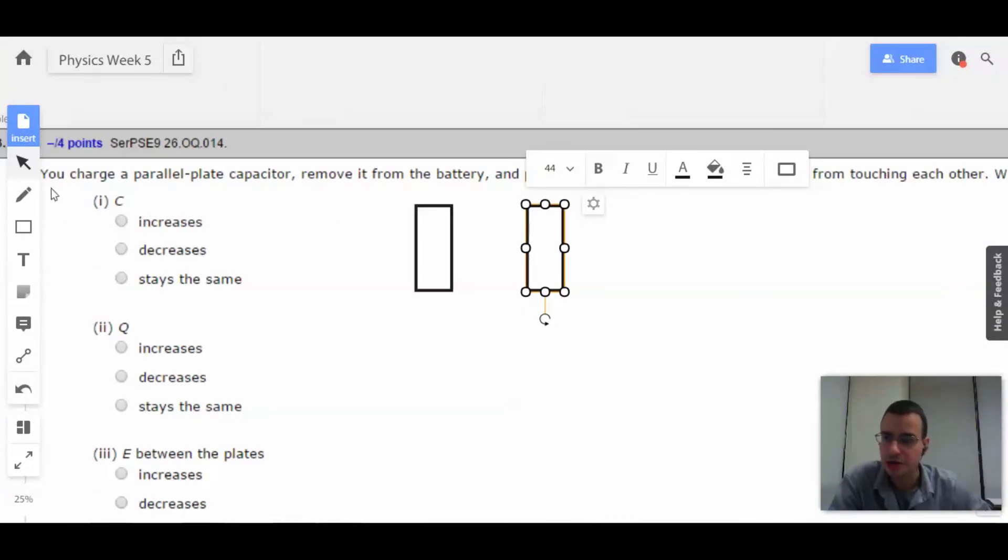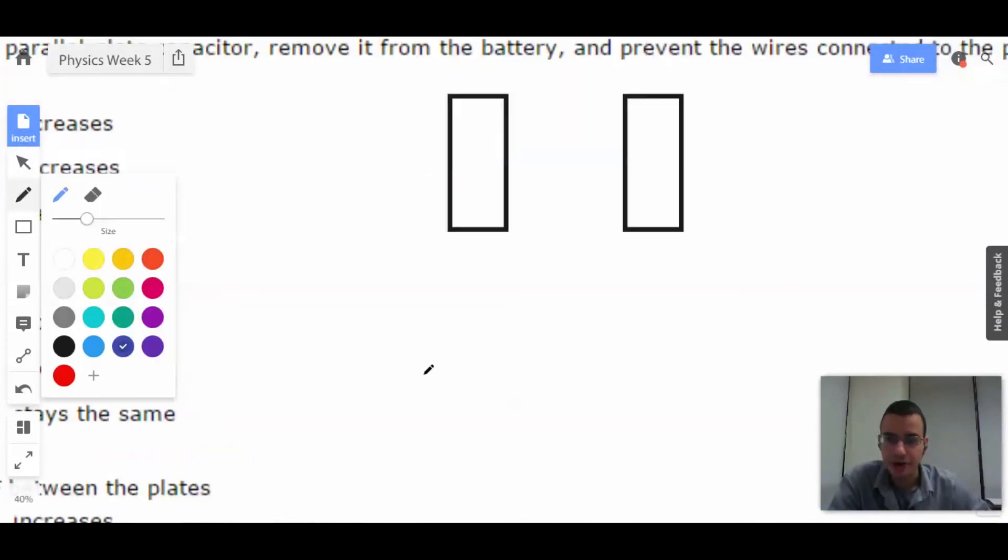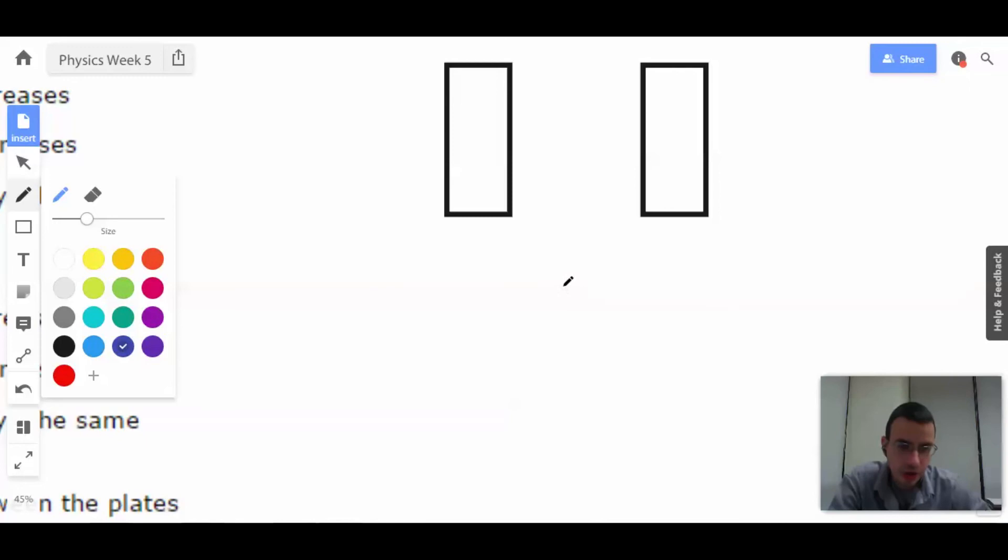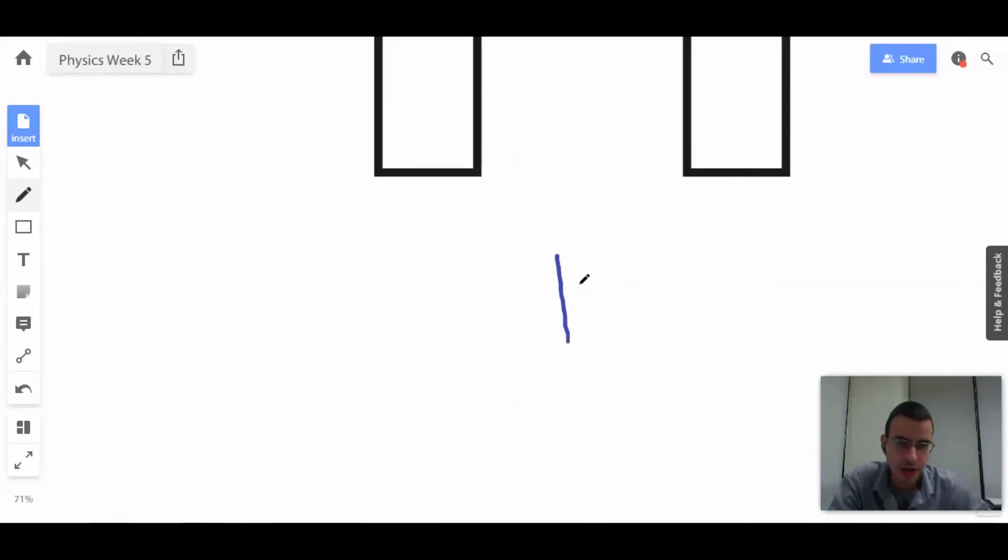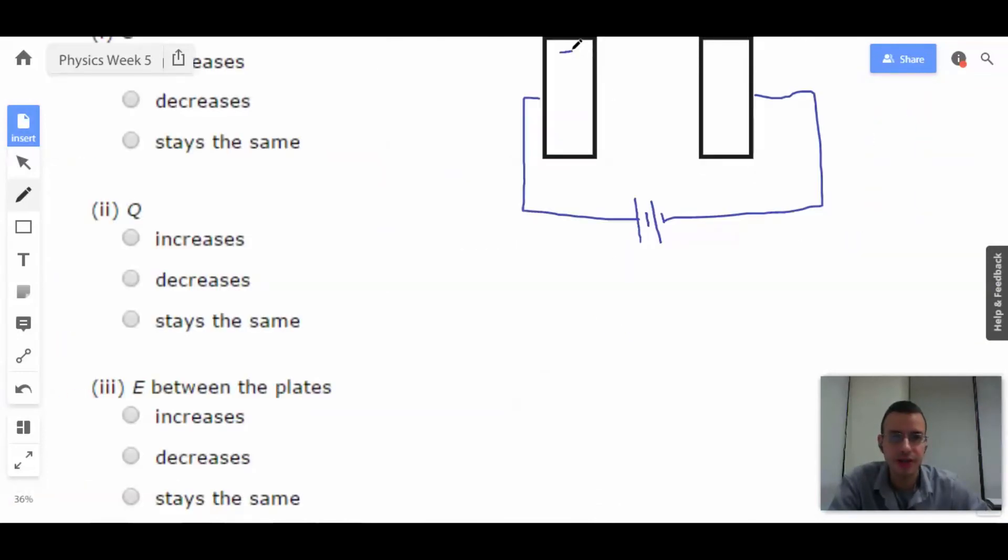Then I'm going to draw a battery as well. So, line, line, line, line, up, up, up, up, up, up. There we go. This will be the positive side. And this will be the negative side.